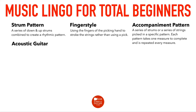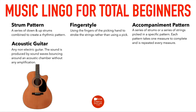An acoustic guitar is any non-electric guitar where the sound is produced by sound waves bouncing around an acoustic chamber without any amplification. When you strum the strings, the vibration bounces around inside the body of the guitar and comes out the sound hole — that's what generates the sound. An acoustic-electric guitar is still an acoustic guitar; it just has a pickup that translates the string vibration to electric current so you can send it through a speaker.